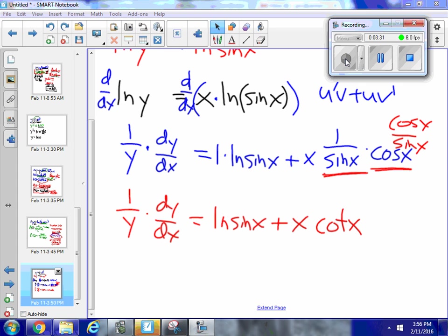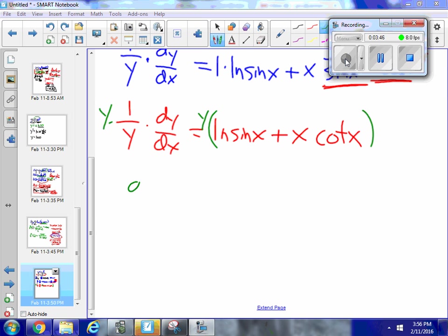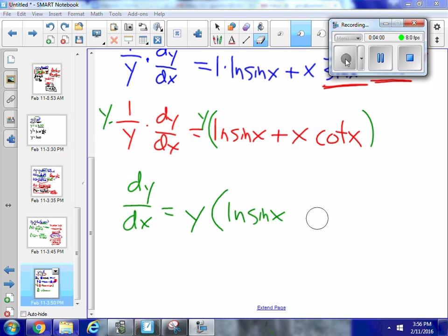Now I can multiply both sides of this equation by y, since I have 1 over y. I can multiply this times y. And I can multiply this whole thing times y. And so I'm left with derivative of y with respect to x is equal to y natural logarithm sine x plus x cotangent x.